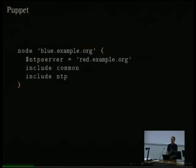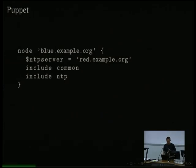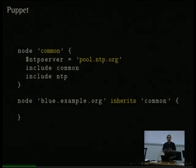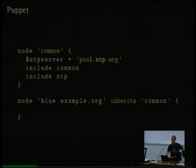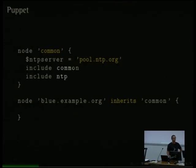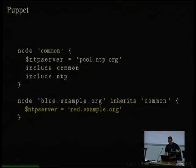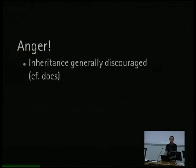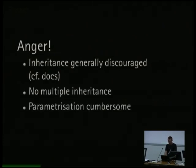Many of you have seen Puppet. You might want to say: blue has an NTP server of red.example.org, is part of the common class and has an NTP role. You might factor that out into the common class because all nodes will be NTP clients — so make the node inherit common, define a default NTP server there, and special-case blue. But things blow up in Puppet because you can only ever define a variable once. Inheritance is discouraged in Puppet, there's no multiple inheritance, and parameterization is really cumbersome. But this talk is not about slagging Puppet, so let me move on.